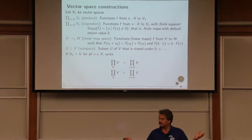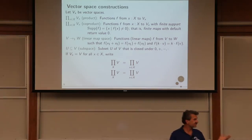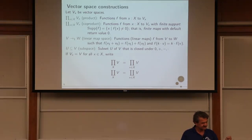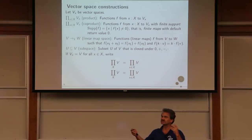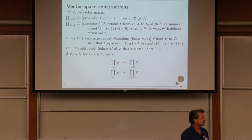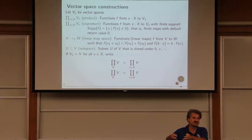Addition of two such functions is pointwise — all constructions here lift from the codomain. If the codomain has a vector space structure (with addition and scalar multiplication), we can lift those operations to functions over any domain set, even a set that is not itself a vector space.